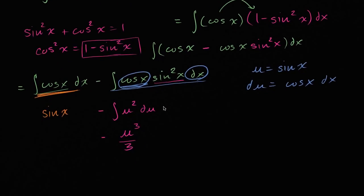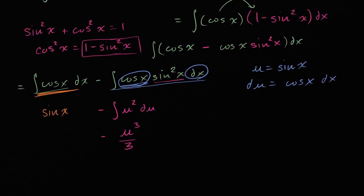And then we know what u is, that u is equal to sine of x. So we have our sine of x here for the first part of the integral. So, for the first integral, we have the sine of x. And then this is going to be minus, let me just write it this way, minus one third. Instead of u to the third, we know u is sine of x. Sine of x to the third power.